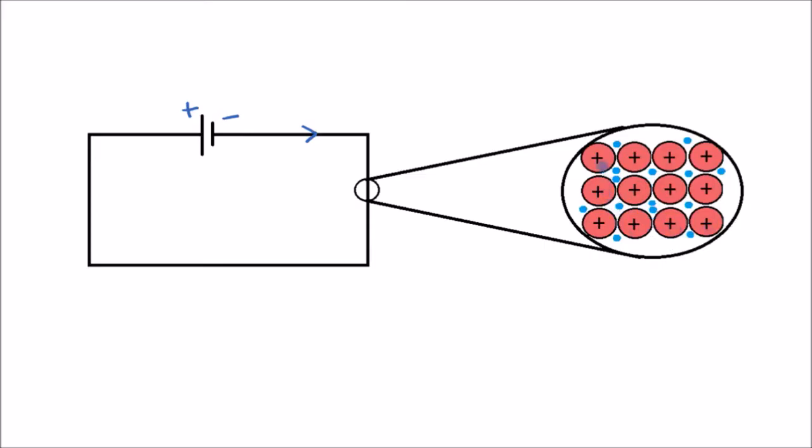As the electrons move along the wire, they're going to collide with these ions. The ions are in the way and they're much bigger than the electrons. These collisions will impede or resist the flow of electrons. Resistance is a measure of how difficult it is for the current to flow.